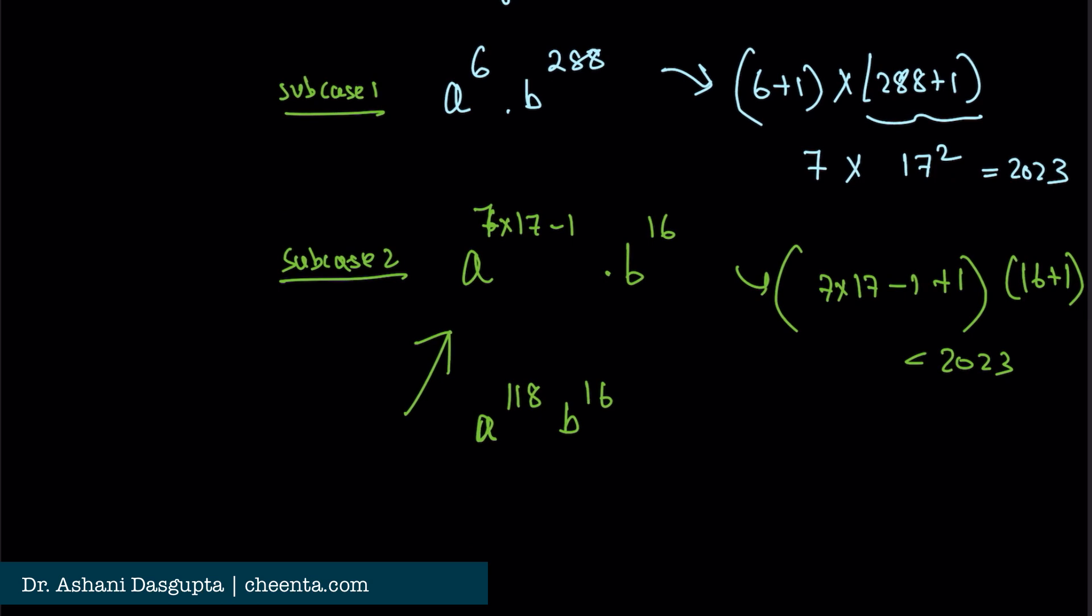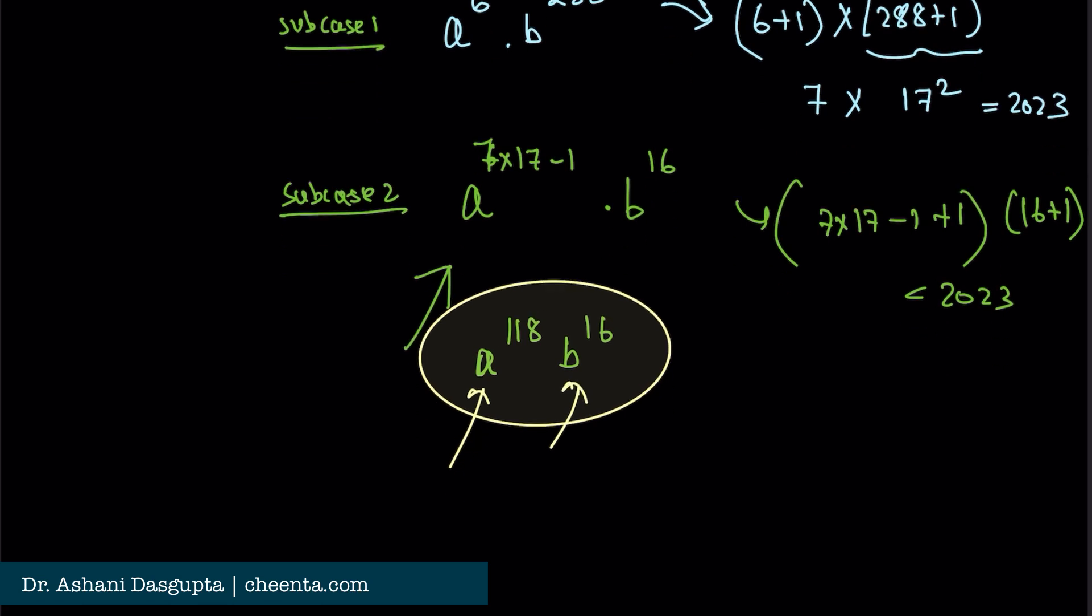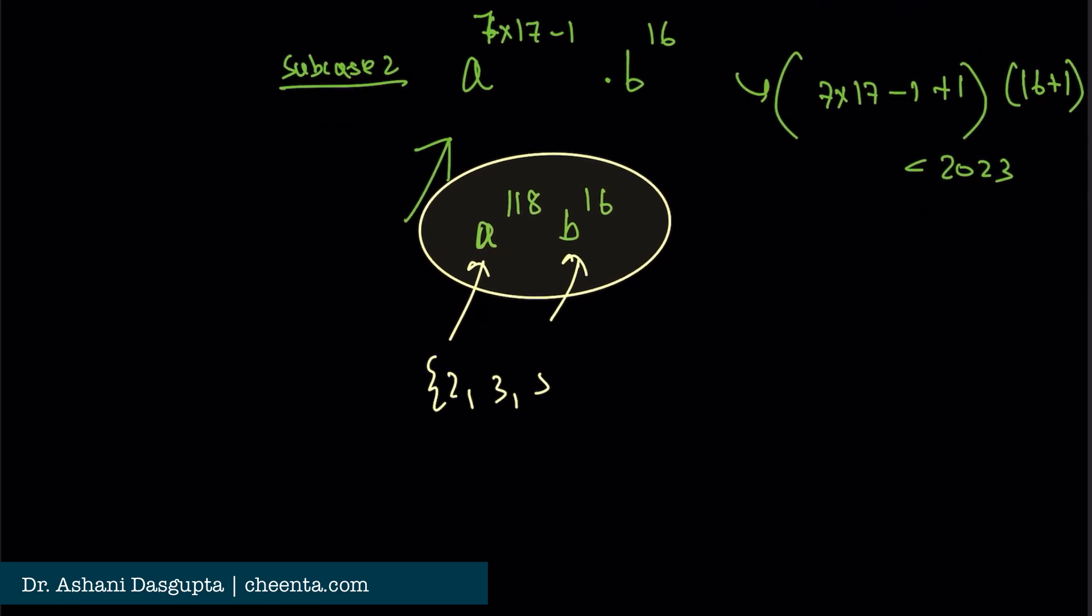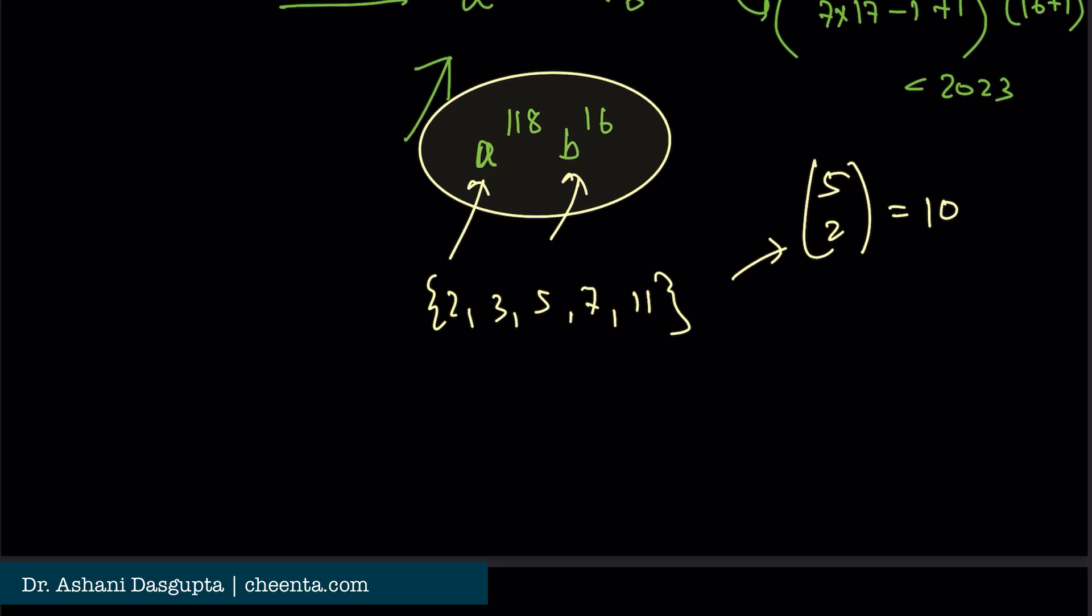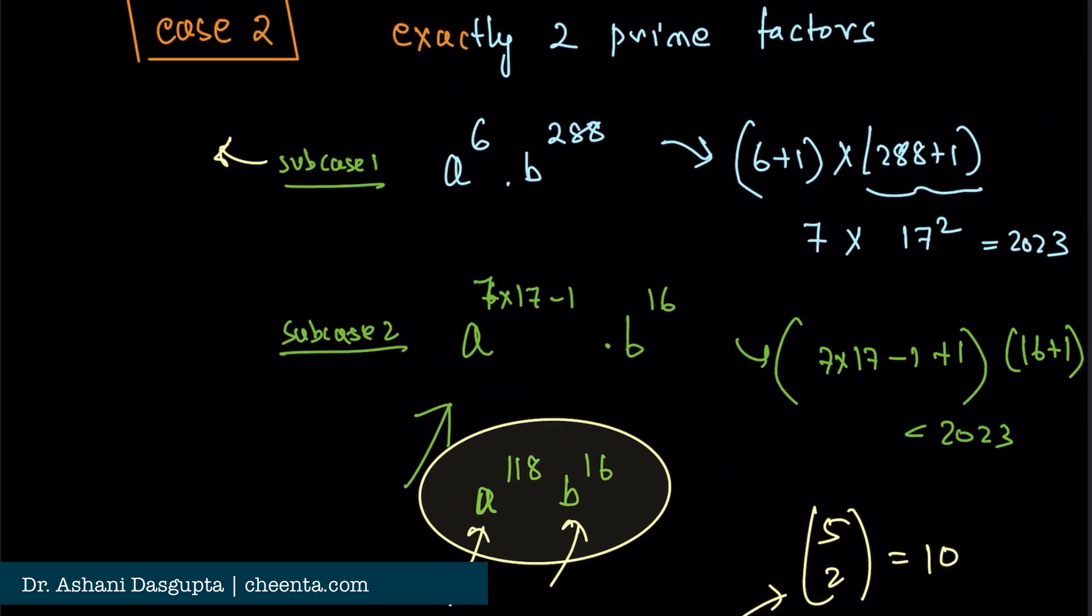How many ways can we do this? First we have to choose a and b from the set {2, 3, 5, 7, 11}. That can be chosen in 5 choose 2 ways, which is 10. We have to decide which one is a and which one is b. So the total number of cases is 10 × 2, which is 20. Similarly, this subcase will have 20 cases.